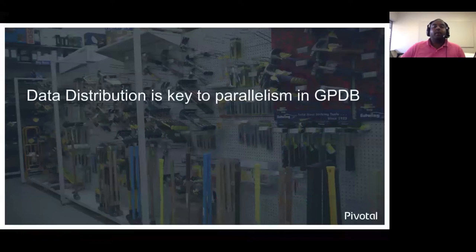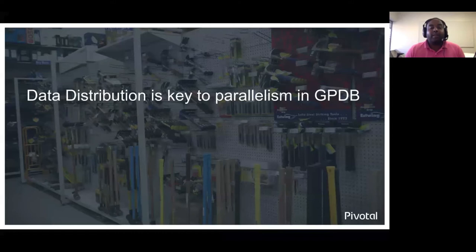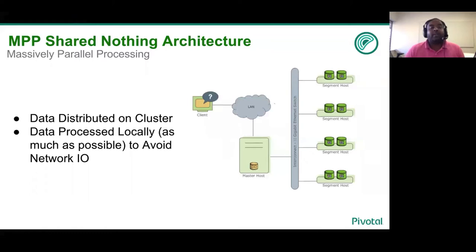Data distribution is key to parallelism that makes GPDB your best solution for big data. GPDB is an MPP shared nothing architecture where the input table from the user is chunked up into smaller pieces. Each of these pieces are then placed on different segment nodes. What this enables is localized operation and maximizing parallelism for your input queries.